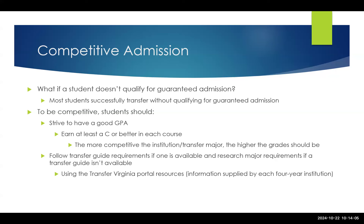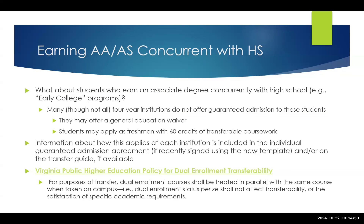If a transfer guide isn't available, students would need to do some research — what are the major requirements and what do I need to be admitted into that major at that college or university? Using the Transfer Virginia portal resources that are available, since this information is supplied by the four-year institution, pretty much everything that a student would need to know to be competitively admitted should be found there.